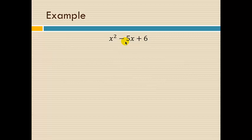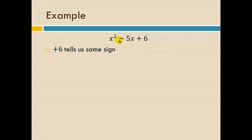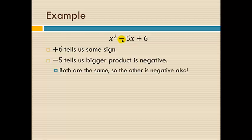Let's look at another example. Here again we've got a plus 6 at the end. This plus at the end tells us that both factors use the same sign. The minus 5 term, because it's negative, tells us the bigger product is negative. And as a bonus, since they're the same sign, the other one is negative as well.